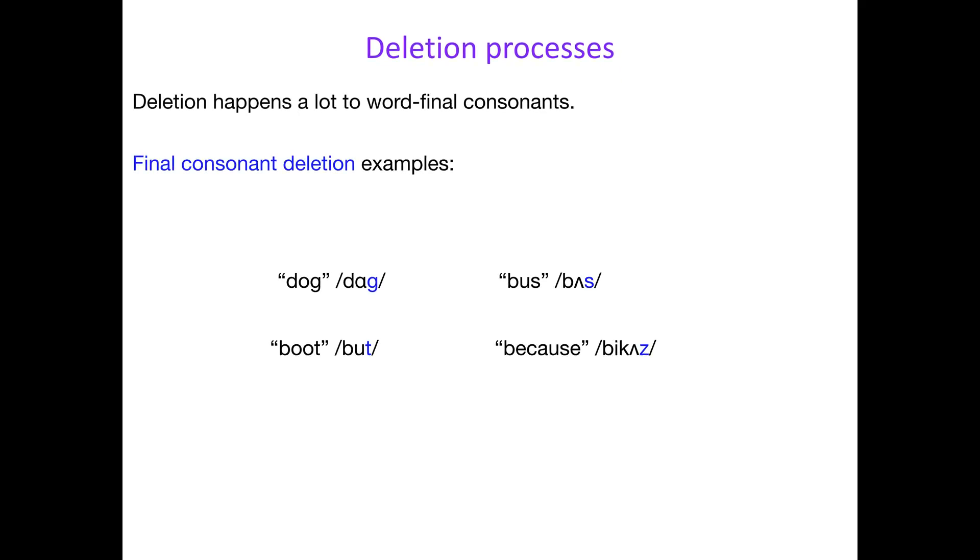Let's talk about deletion processes in children's pronunciation. Deletion happens a lot, for example to word-final consonants, using a process called final consonant deletion. This is exactly what it sounds like: the final consonant in the word, the consonant at the end of the word, just doesn't get pronounced—it gets deleted.